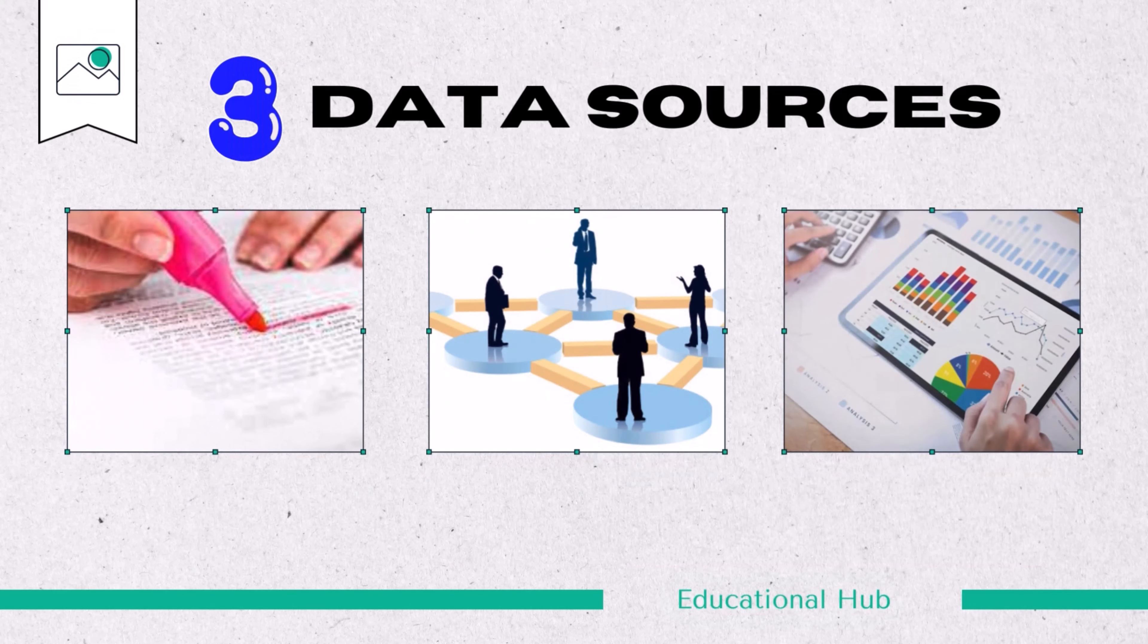3. Data sources. Research designs outline where and how data will be collected. This includes specifying whether data will be gathered through primary sources, for example, surveys, interviews, observations, or secondary sources, for example, existing data sets, literature reviews.